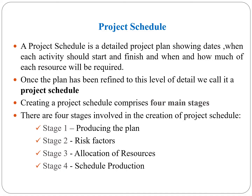To create a project schedule, it comprises four important stages. The first stage is producing the plan. The second comes risk factors. The third is allocation of resources. Then the final stage is schedule production. We are going to discuss each and every stage one by one in detail.